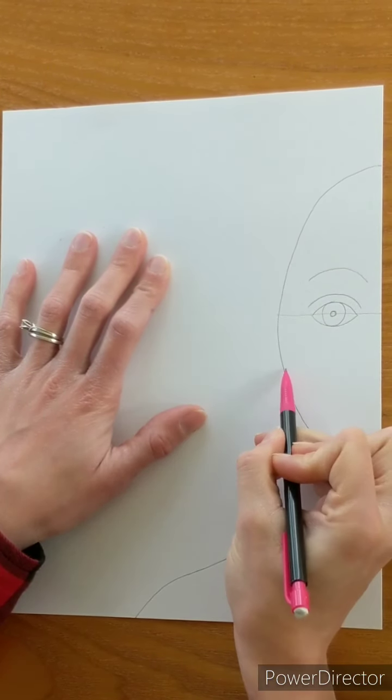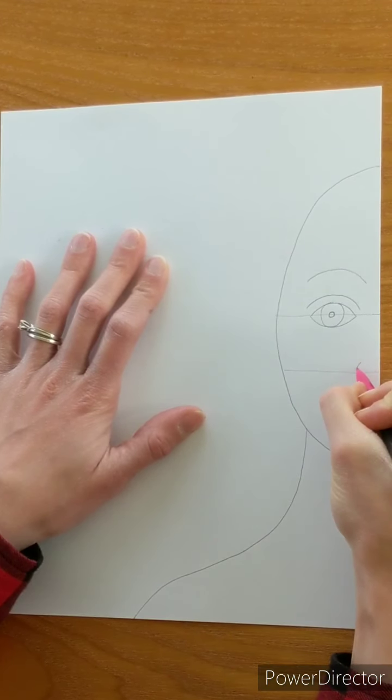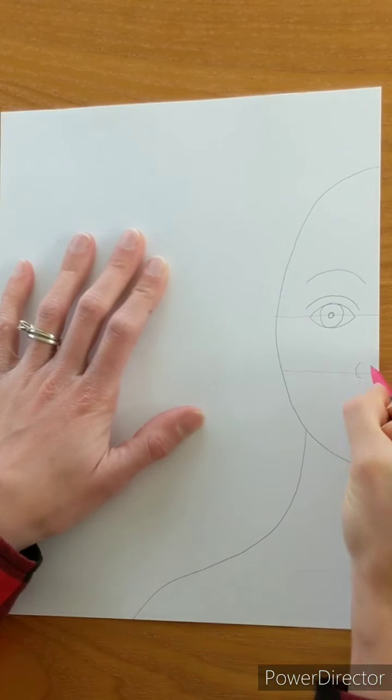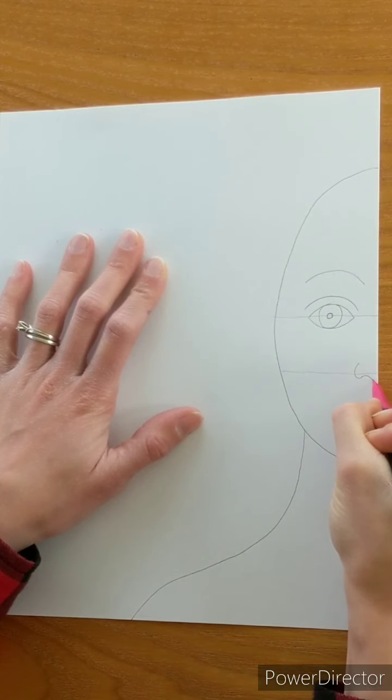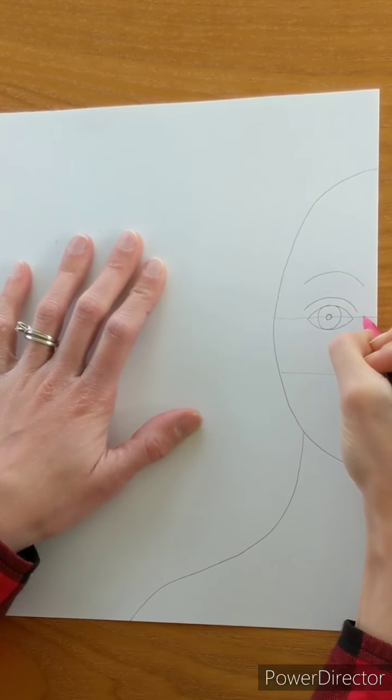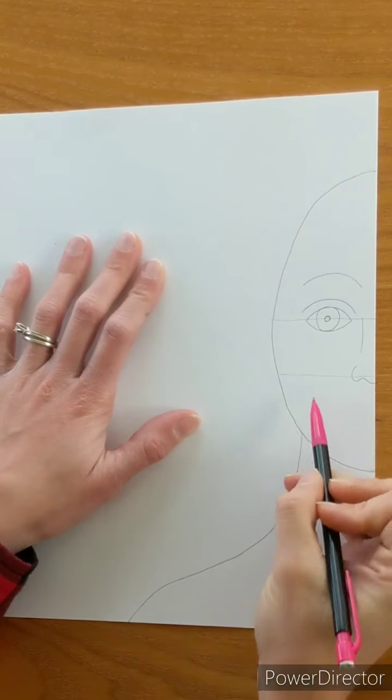In between your eye and your chin, you're going to draw a C for your nose and a curved line for your nostrils. Draw another curved line down for the bridge of your nose.